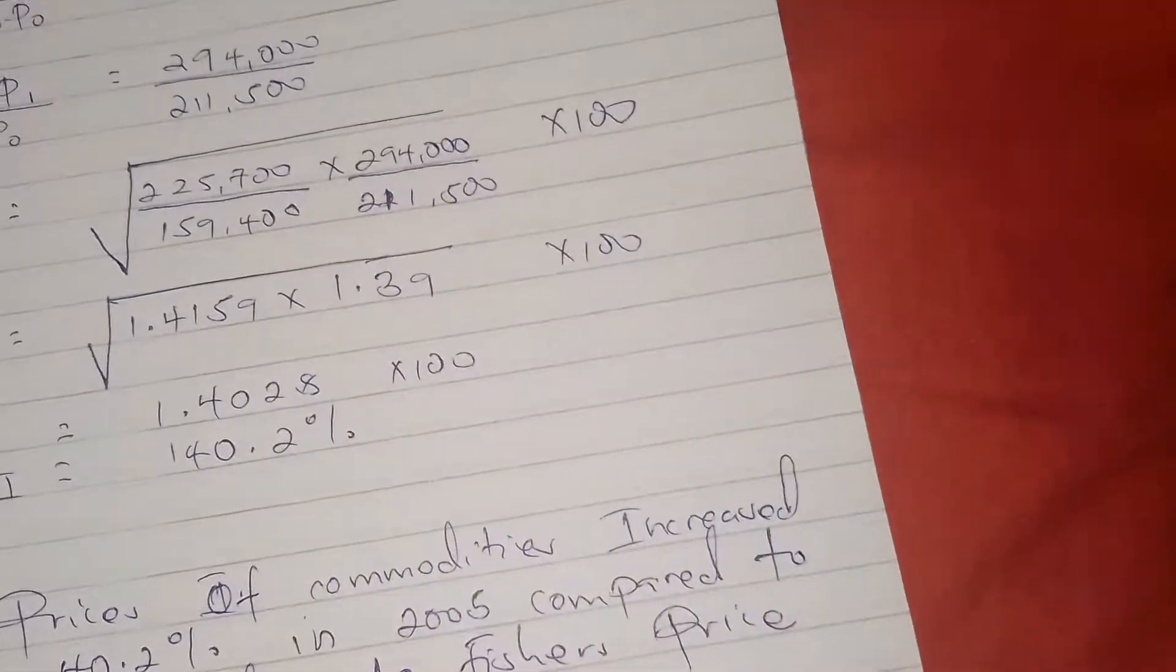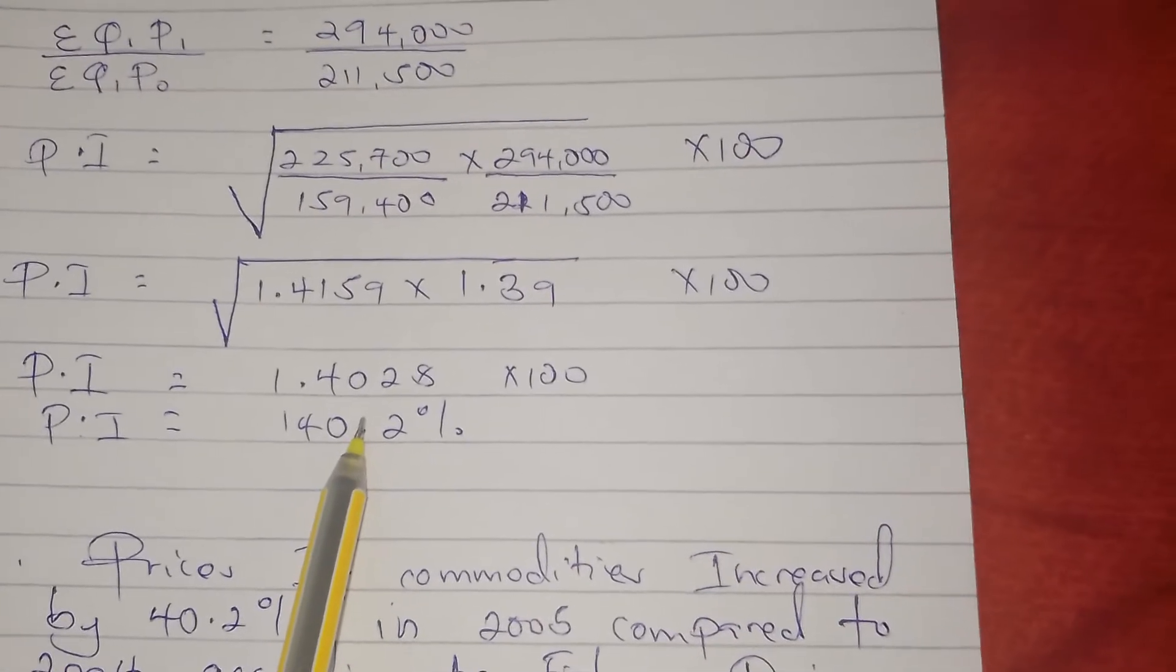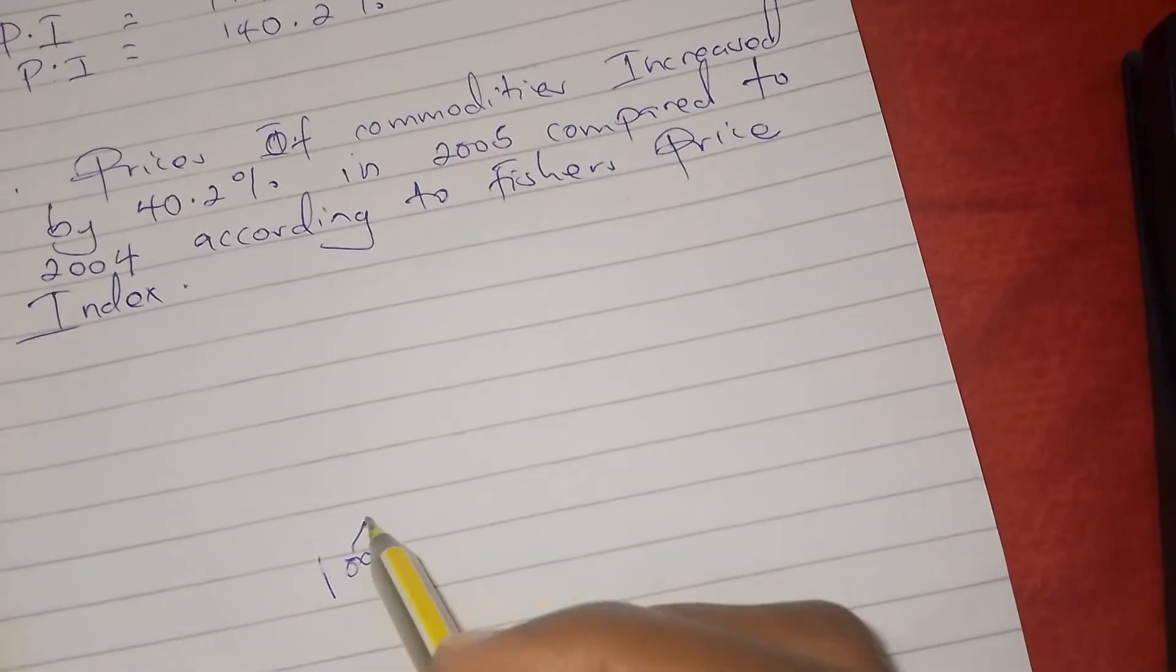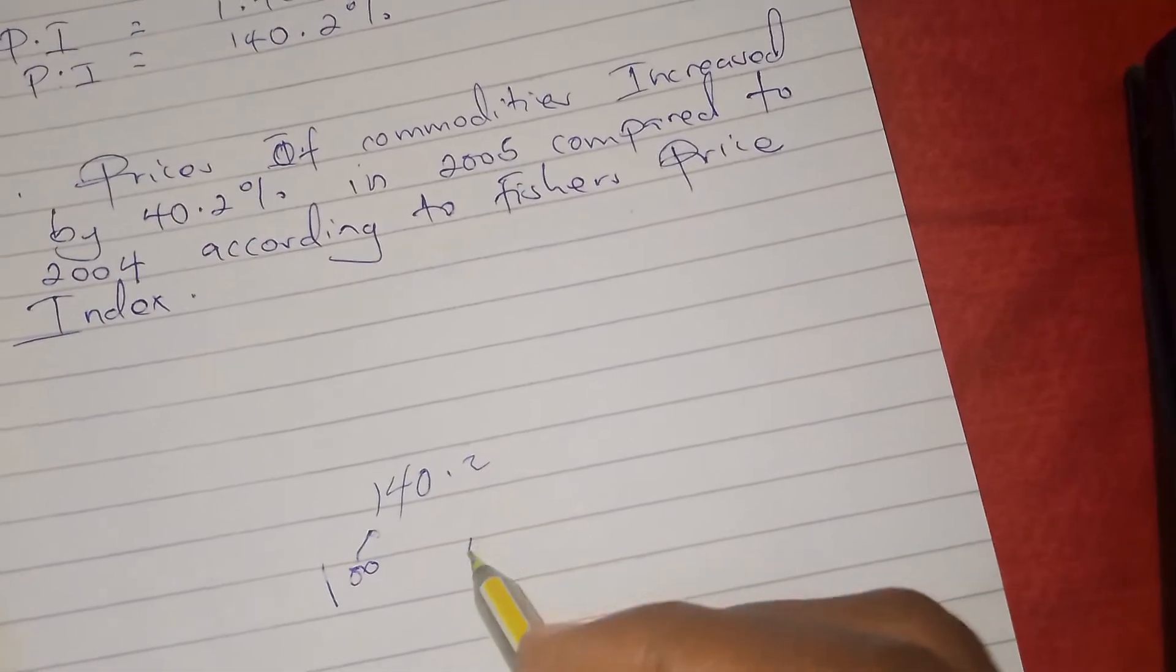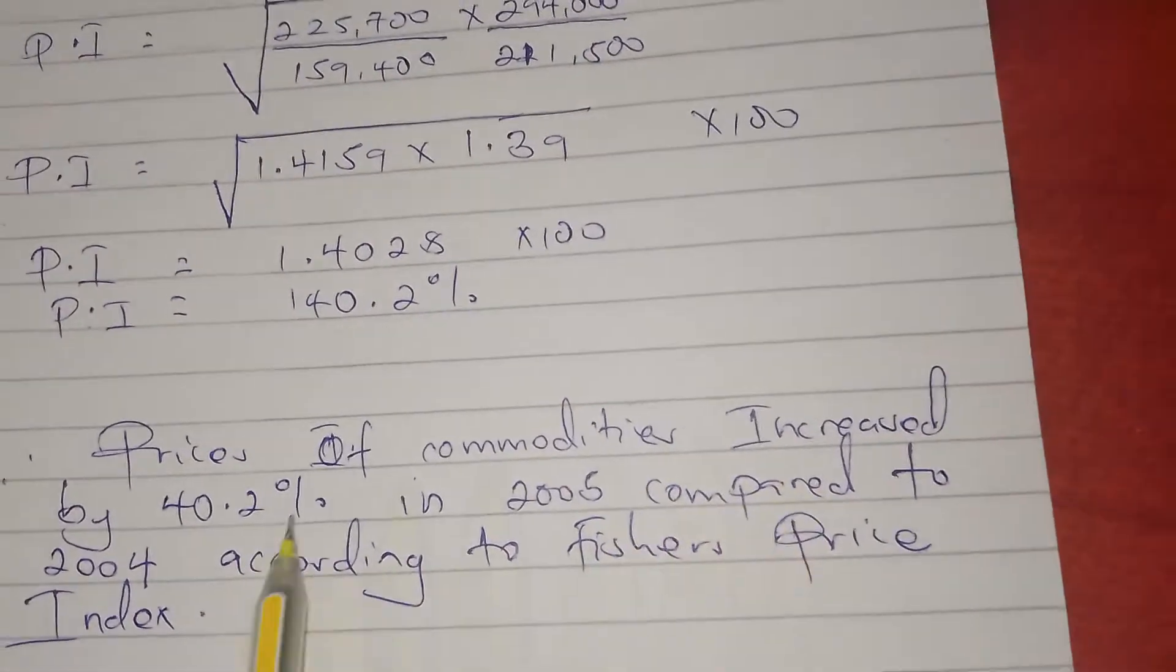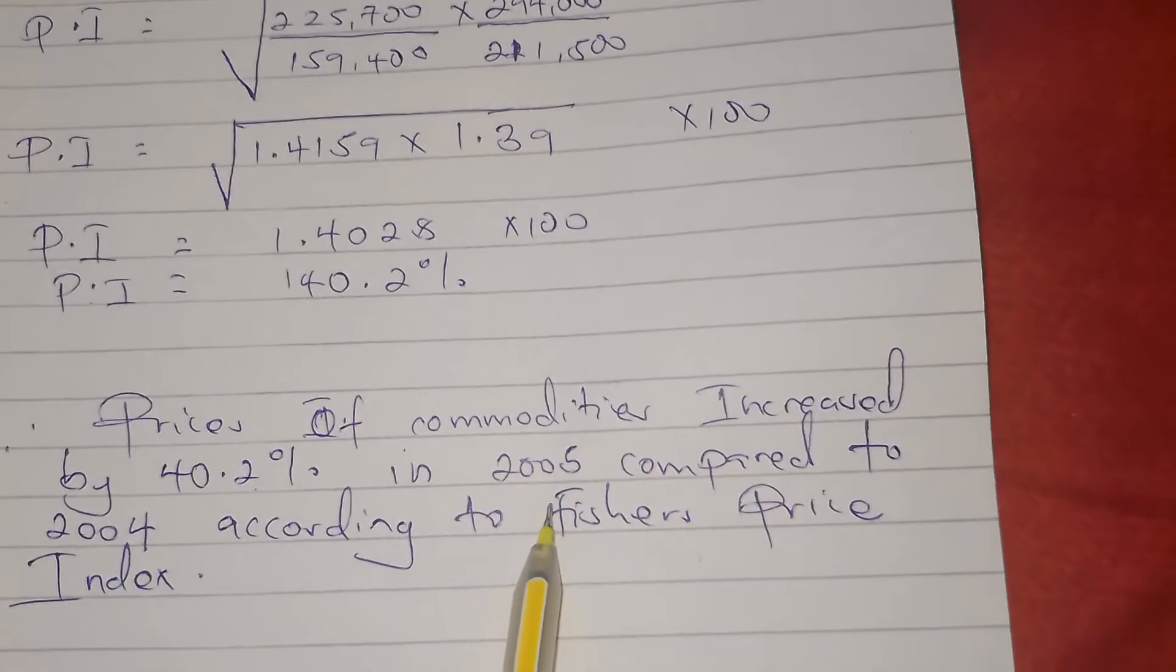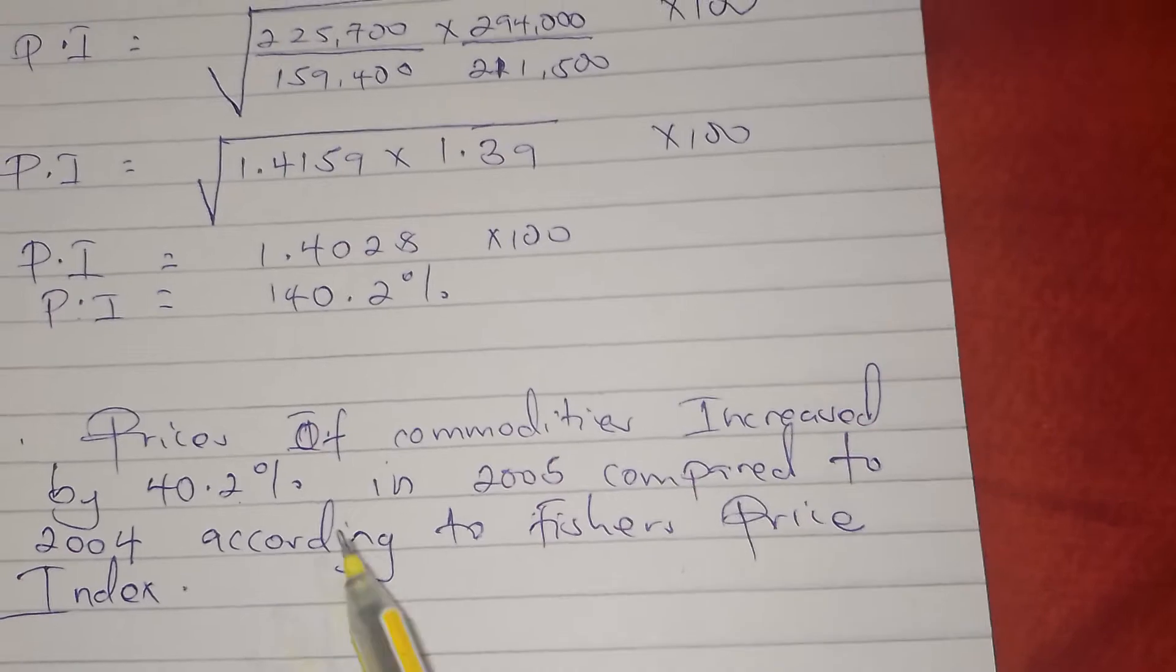Which is 140.2. So 140.2 is the price index according to Fisher. The normal price index is 100, therefore it increased to 140.2. There is an increase of 40.2. So prices of commodities increased by 40.2% in 2005 compared to 2004 according to Fisher's price index.